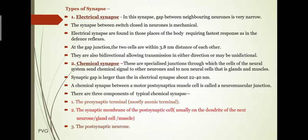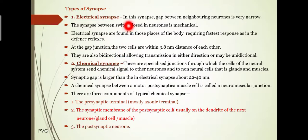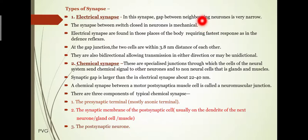There are two types of synapse: the electrical synapse and the chemical synapse. In the electrical synapse, the gap between the neighboring neurons is very narrow.